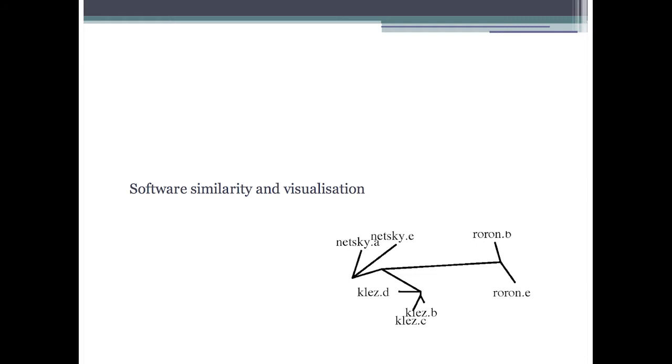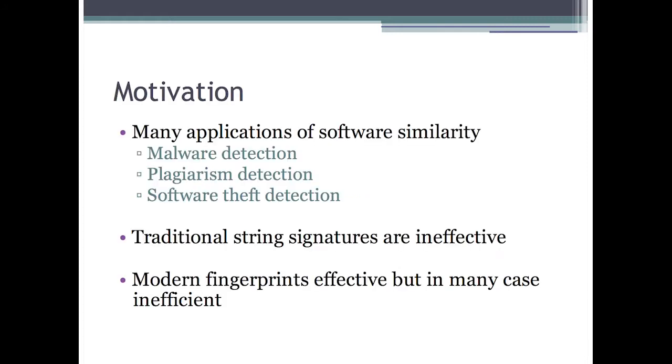First I want to talk about my software similarity service, known as SimSea. There are lots of applications of software similarity: malware variant detection is the classic example, plagiarism detection, and software theft detection. The reason we need these tools as opposed to traditional signature-based methods is that traditional string signatures are really ineffective. It's very easy to have a variant of a program that a string signature doesn't detect. Modern fingerprints are effective, looking at program structure rather than strings, but they're often very slow and inefficient.